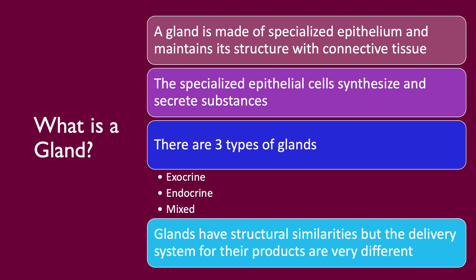Let's start with: what is a gland? All glands are made of specialized epithelium, organized and maintained by connective tissue. All glands synthesize and secrete a product that the body needs. The main difference between the two is the delivery system for the products. There are three types of glands: exocrine, endocrine, and mixed, or both.